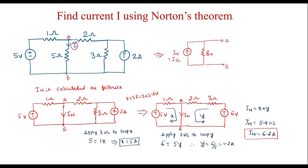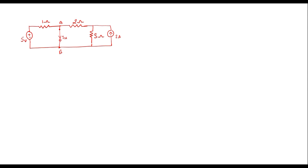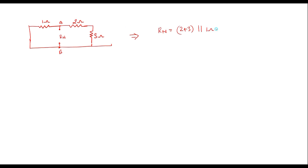Now let us calculate Norton's resistance Rn. To find Rn, we remove the short-circuited path and keep it open. All active sources are deactivated: voltage sources are short-circuited and current sources are open-circuited. Terminal A and terminal B are identified. The equivalent resistance between these two terminals is Rn. We can observe that 2 ohm and 3 ohm are in series, which is in parallel with 1 ohm. Therefore, Rn equals (2 + 3) in parallel with 1, which equals 5 divided by (5 + 1), that is 5/6 ohms.